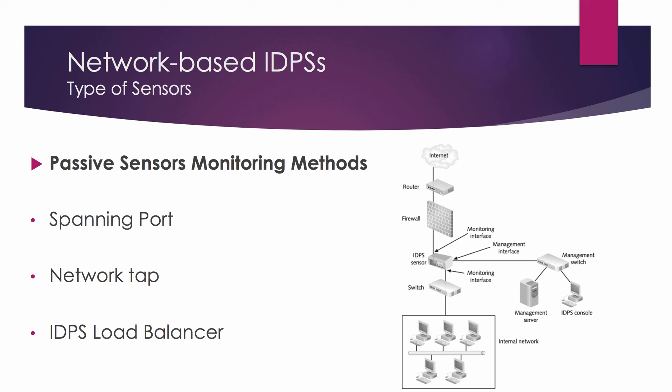Another method is a network tap. A network tap is a direct connection between a sensor and the physical network media itself, like a fiber optic cable. The tap provides the sensor with a copy of all network traffic being carried by the media. Installing a tap generally involves some network downtime, and problems with a tap could cause additional downtime.